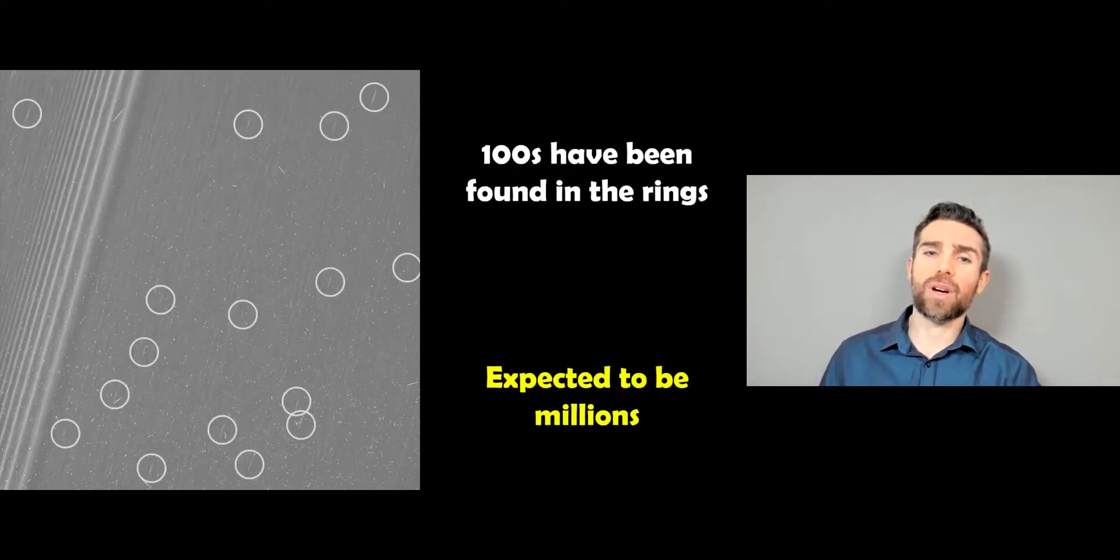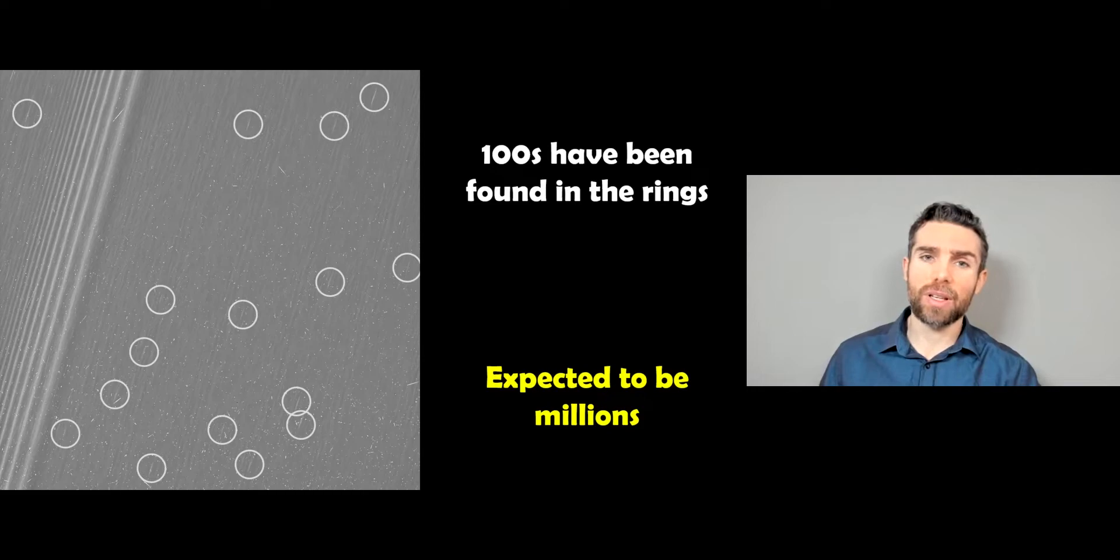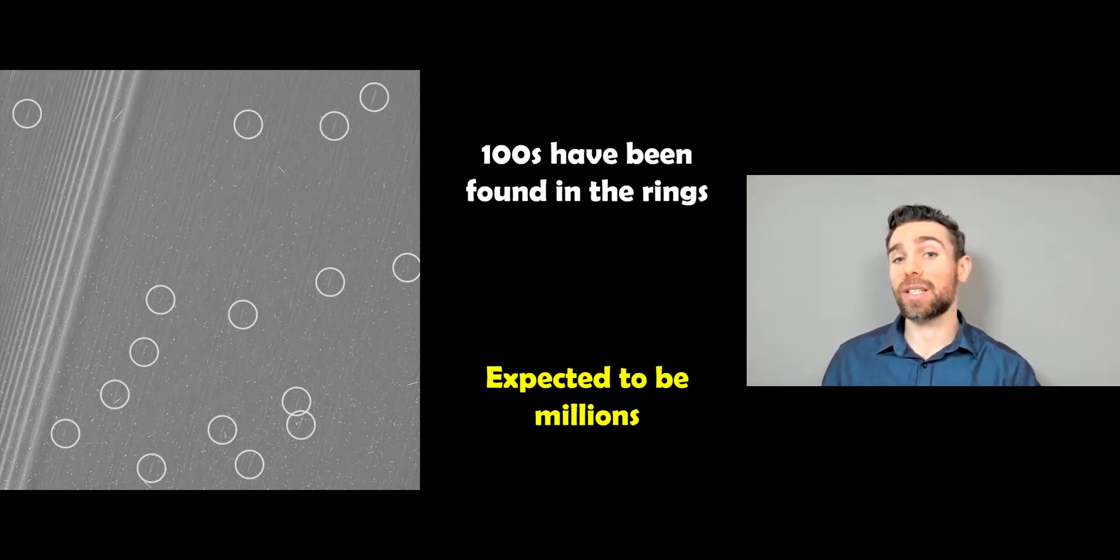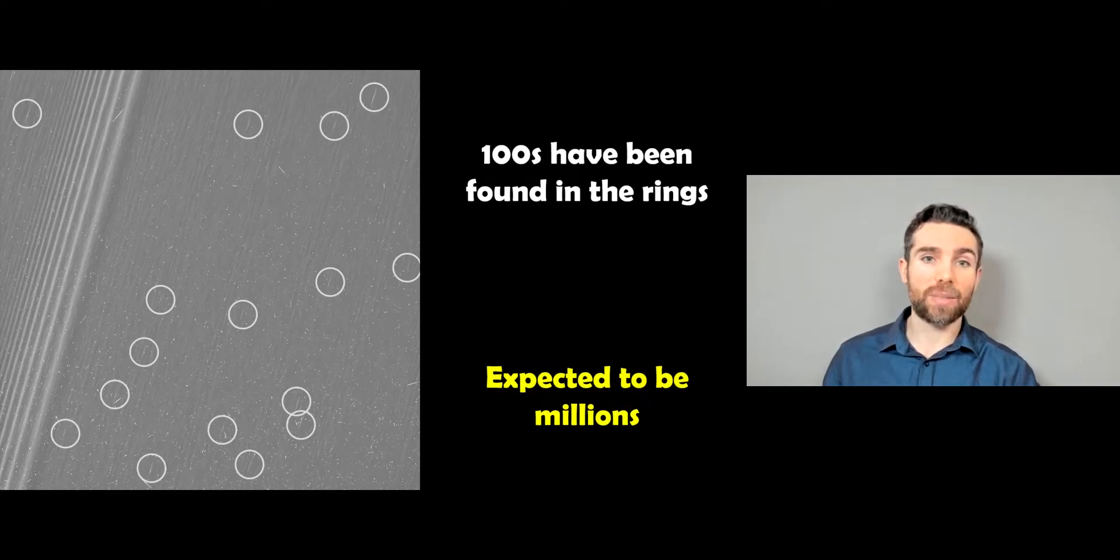So there are hundreds of these been discovered. And there's some examples here. So there's loads in that frame just there. And you imagine if you scale up to the entire rings. So hundreds have actually been found. But it's also expected that there are millions of these in the rings as well. So these are not particularly rare things. They're expected to be quite widespread in the rings.